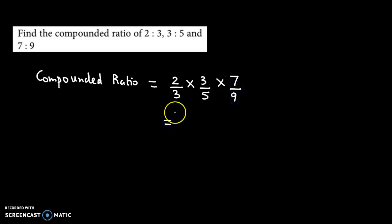So if we simplify this, 3 cancels with 3. 2 times 7, so that's 14, and 5 times 9, that's 45. So the compounded ratio is 14 is to 45, or 14 by 45.